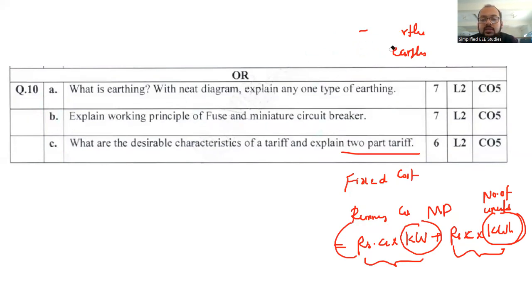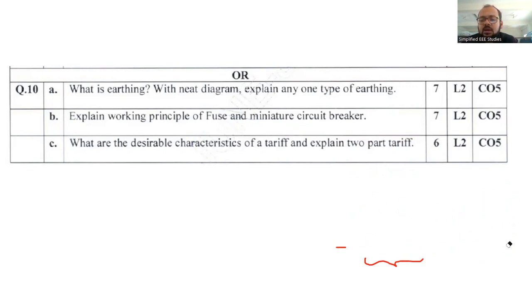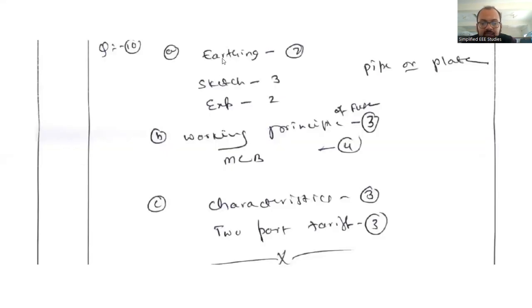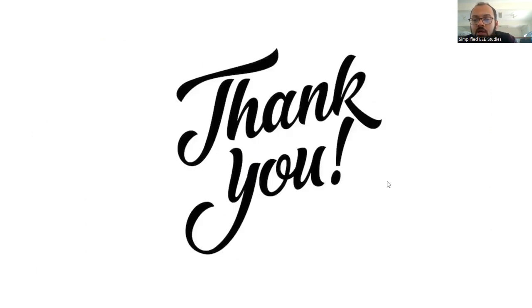Very easy question, please don't leave this. I request that you write the fifth module at the beginning itself - immediately you can confirm your score. It's a very simple chapter. Follow the key: working principle of fuse 3 marks, MCB 4 marks, characteristics 3 marks, two-part tariff 3 marks.